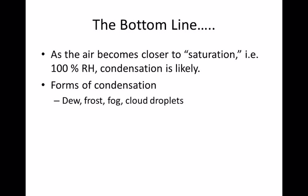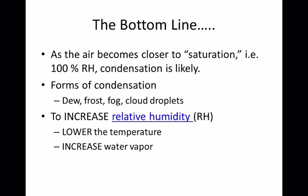Bottom line: if you want to take a chunk of air and make it saturated — 100% relative humidity — you have two options. You can cool it down, which changes the saturation point in the denominator without changing the water vapor. Or you can add more water vapor to it.